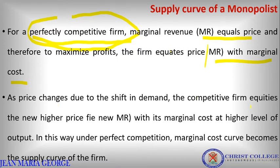In a competitive firm, as the price increases, the marginal cost increases accordingly. The firm accepts the market price and produces output based on that price. This is the perfect competition scenario. In the competitive market, the marginal cost curve acts as the supply curve — the MC curve represents the supply curve.